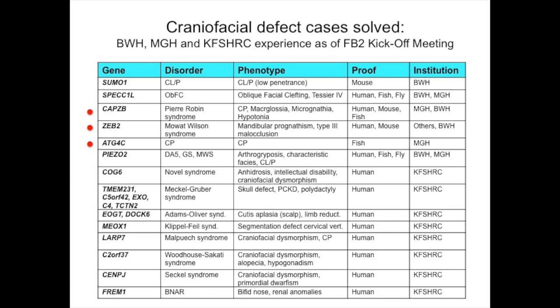I'm summarizing cases we solved in the past — many for chromosomal rearrangements — as of the last FaceBase kickoff meeting. Cases solved locally are shown alongside ones Falzon solved at King Faisal. Most were done by exome sequencing or by homozygosity mapping and candidate gene testing in the earlier days, and most have been published. We're still working on a couple, including CAPZB, ZEB2, and ATG4C.